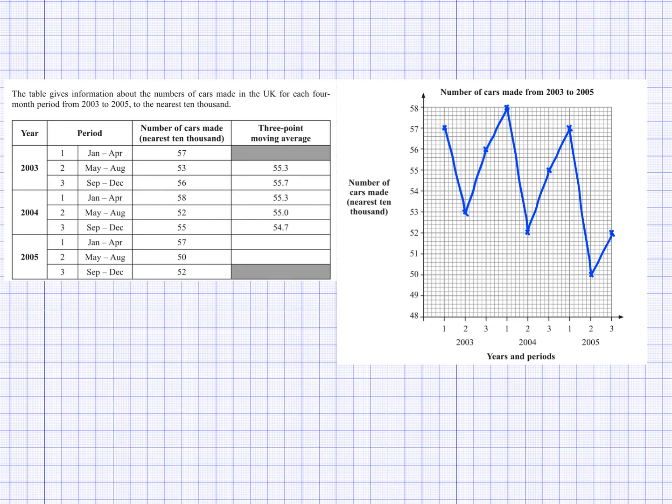So what I have here is some information about number of cars being made in the UK and this is separated into three seasons, so four months per season. So January to April is your first season, May to August is your second season, September to December is your third season and this is for 2003 and this again repeats for 2004 and 2005.